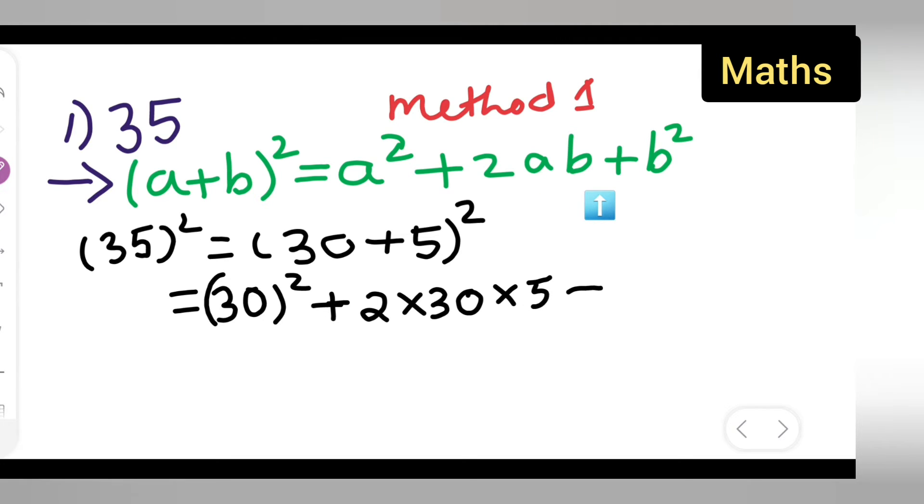Next is multiplication. 30² is 900, so you will get 900 here. Plus 2×5 = 10, 3×10 = 30, so 300. This is going to be 300.